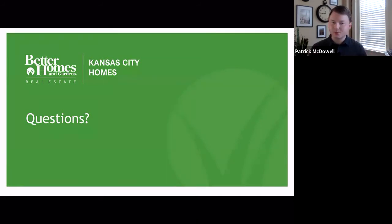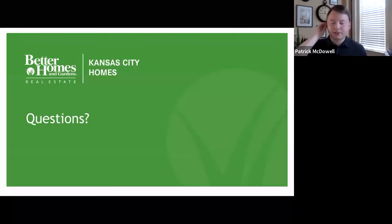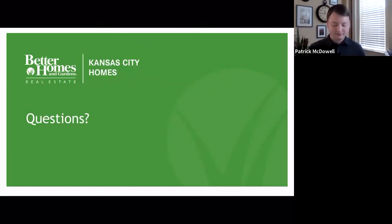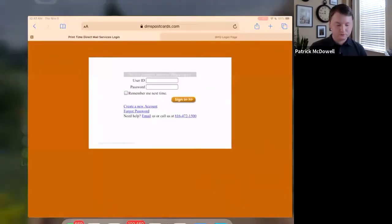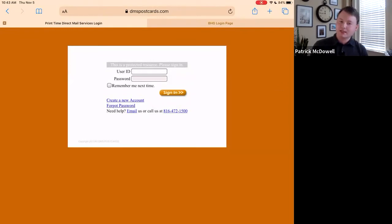After we transition here, we're going to jump into actually looking at these websites and figuring out how to do this stuff — what to do, where to do it, and how to do it. That's basically what we're going to cover. We're going to do Print Time, take a little break, come back and look at ExpressDocs, then look at Pinpoint, and then come up with your game plan of how you're going to change your life with mail marketing. Alright, let's first look at Print Time, which is the same as DMS Postcards.